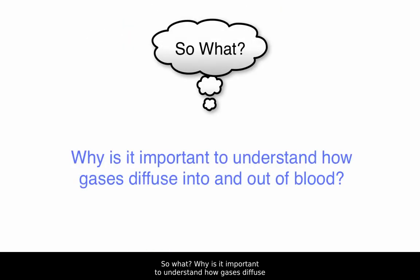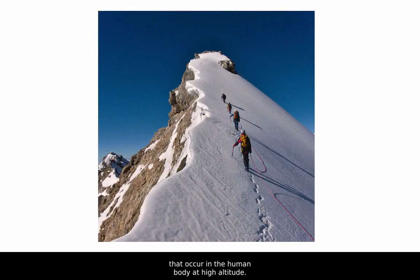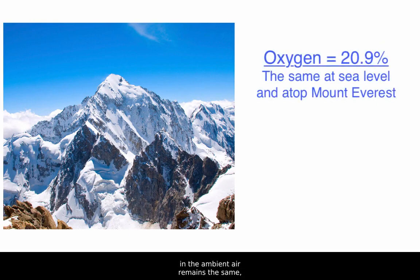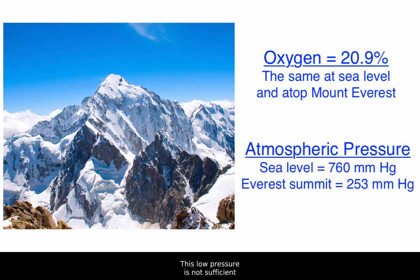Why is it important to understand how gases diffuse into and out of blood? This knowledge is crucial to understanding the changes that occur in the human body at high altitude. As climbers approach the summit of Mount Everest at over 29,000 feet, their performance suffers dramatically. While the percentage of oxygen in the ambient air remains the same, the overall atmospheric pressure drops by one-third — not sufficient to adequately saturate the red blood cells of the pulmonary capillaries with oxygen.